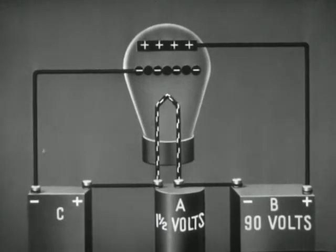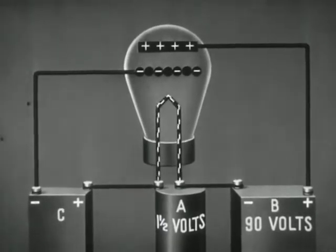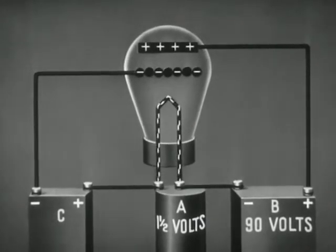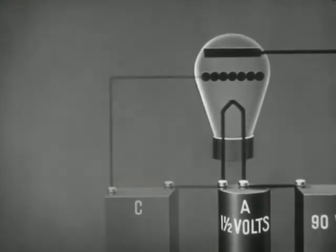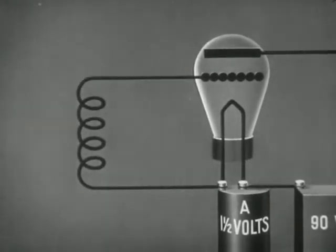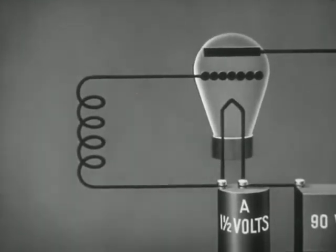Thus, the amount of plate current flowing depends upon the kind and the amount of electrical charge on the grid. Now let us connect the grid and the filament to the secondary coil of a transformer whose primary is connected to an aerial.